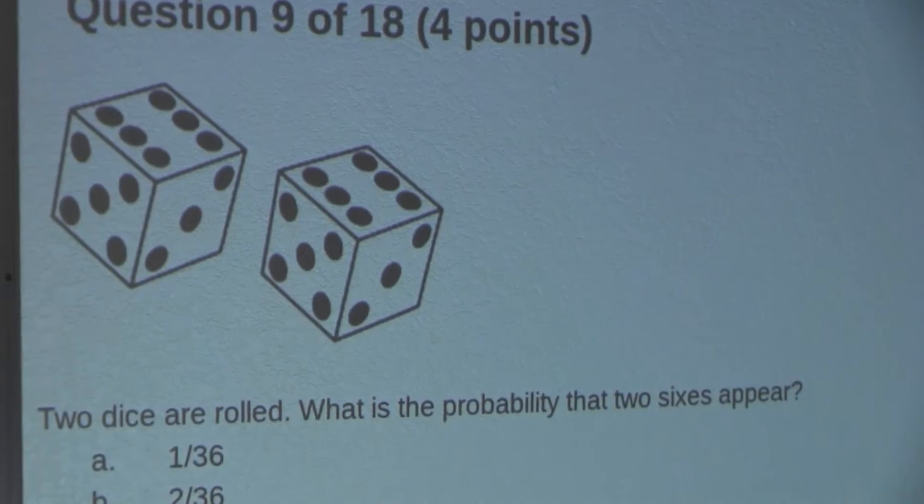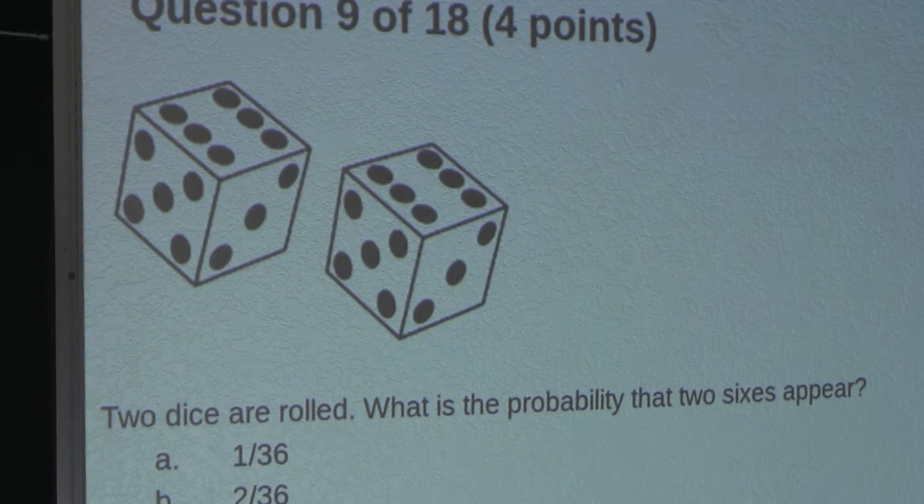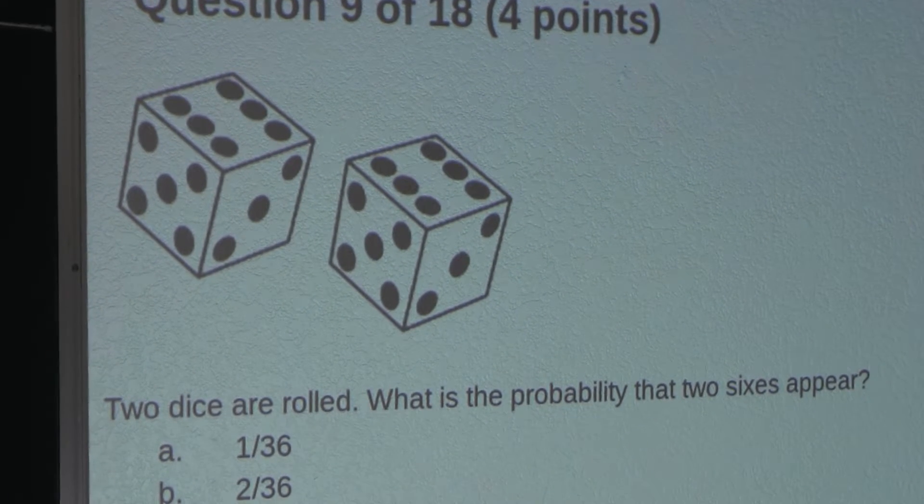The question is: two dice are rolled. What is the probability that two sixes appear?